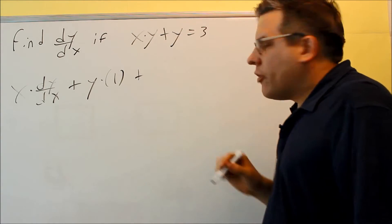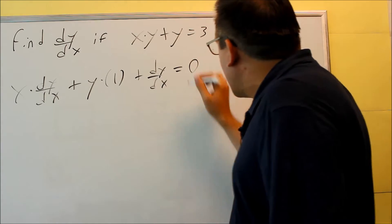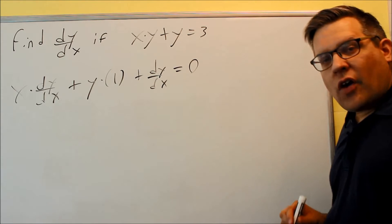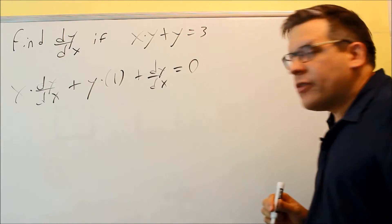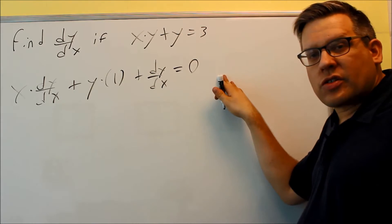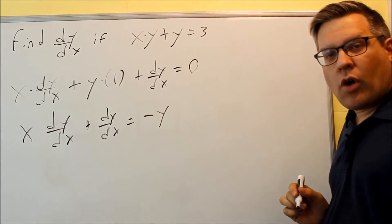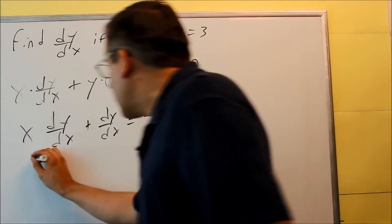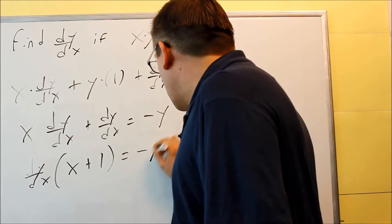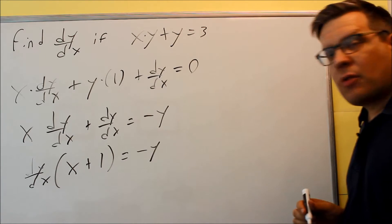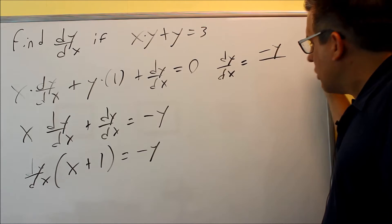Then we add the derivative of y, which is dy/dx. After the equal sign it's going to be zero — the derivative of any constant is zero. Now we solve for dy/dx: leave everything with dy/dx on one side, move the y over. So x times dy/dx plus dy/dx equals negative y. Factor out dy/dx to get dy/dx times (x plus 1) equals negative y. Divide both sides by (x plus 1), and we get dy/dx equals negative y over (x plus 1).